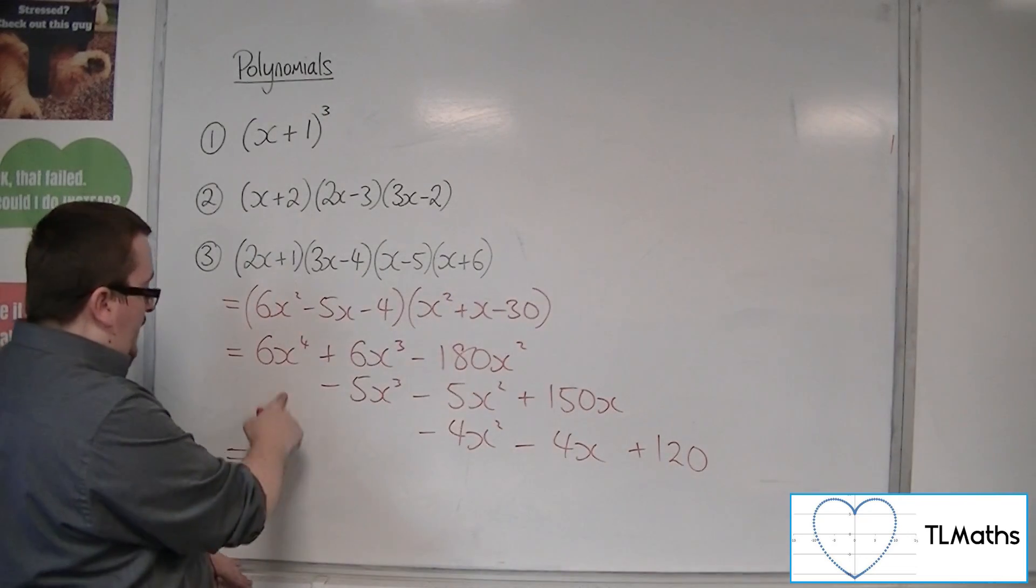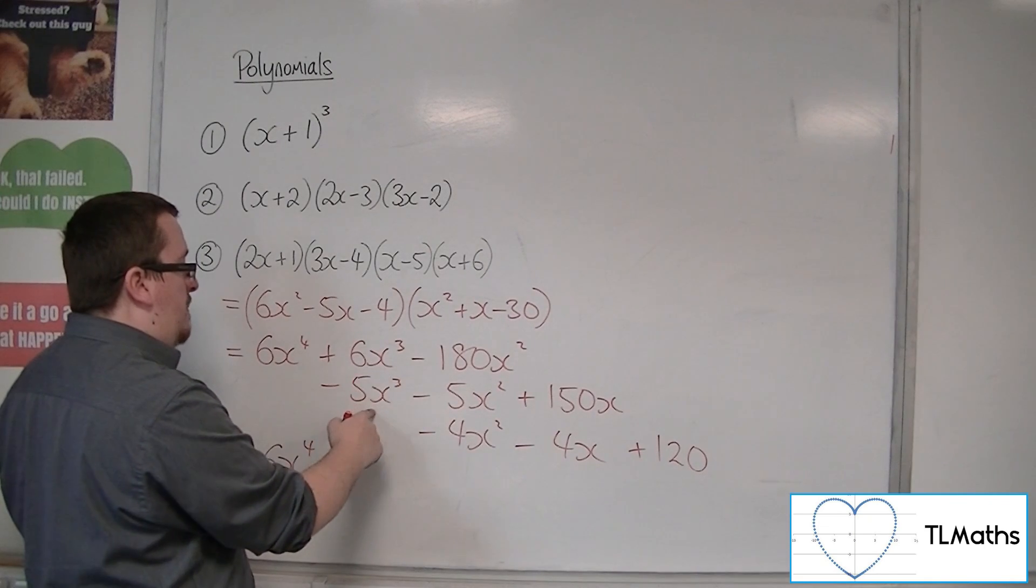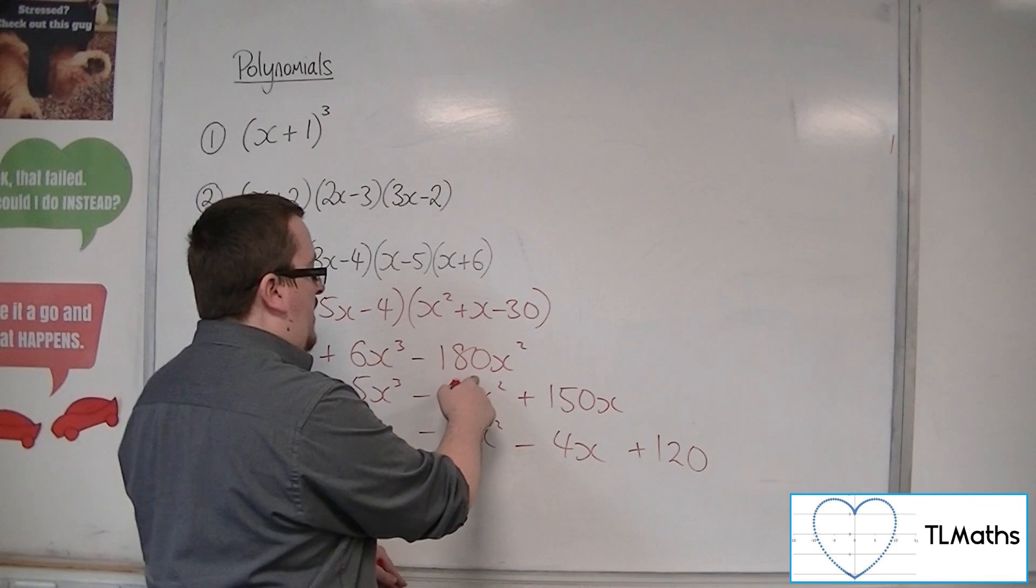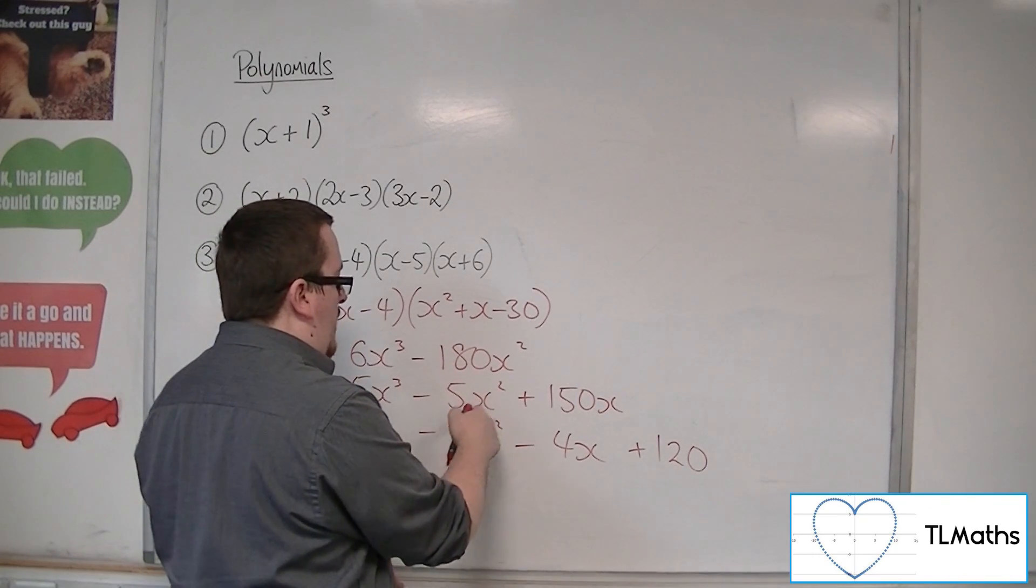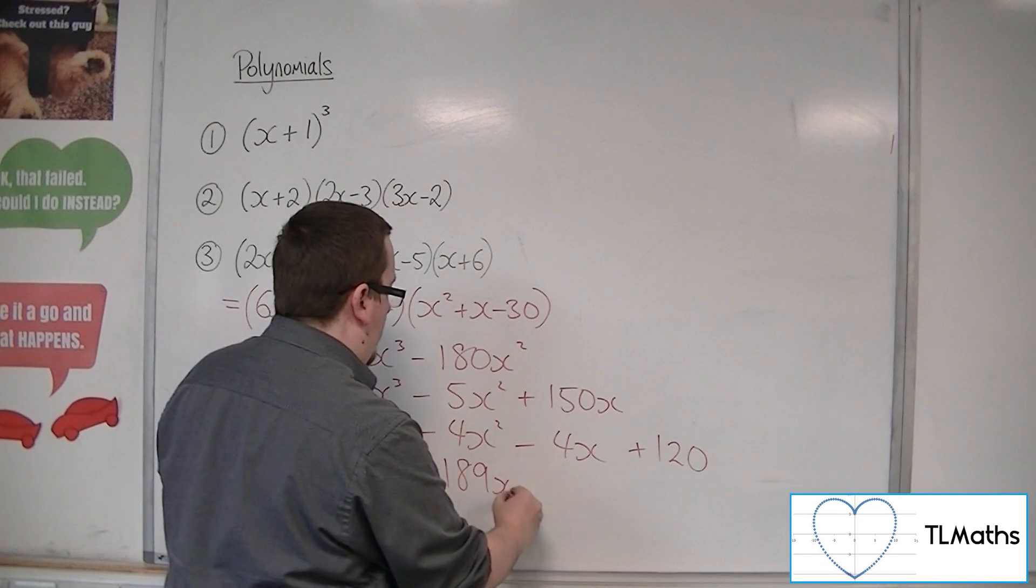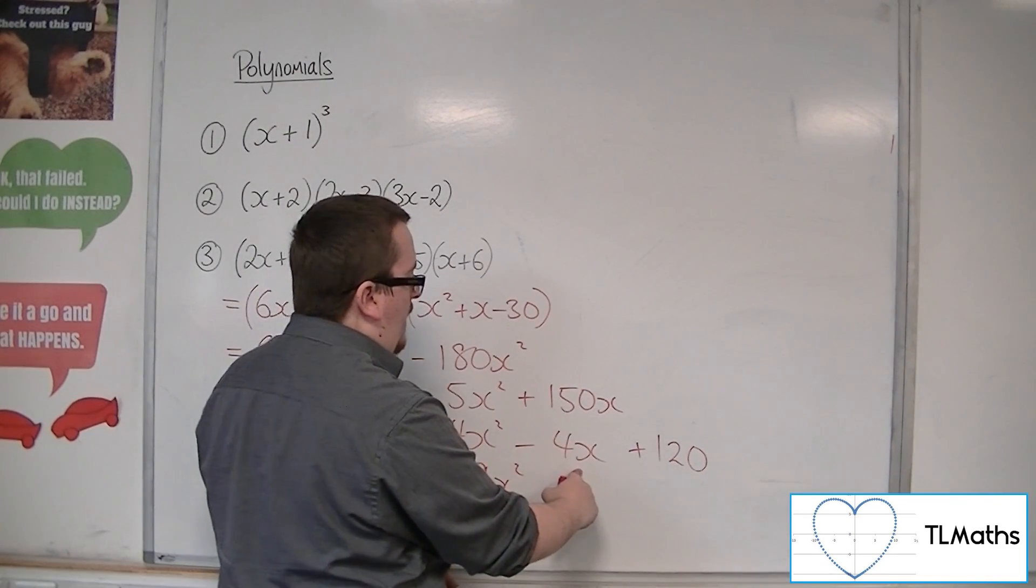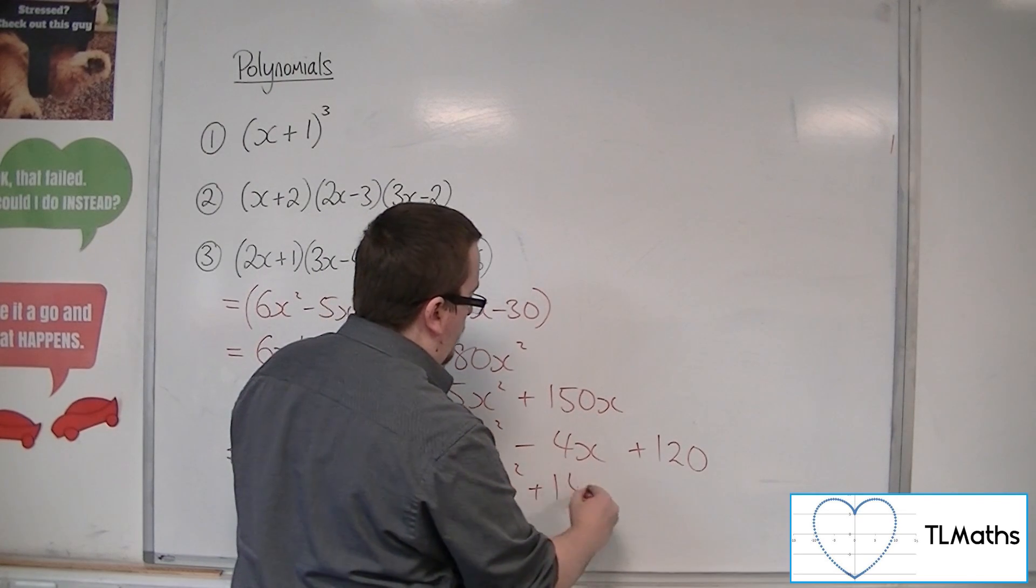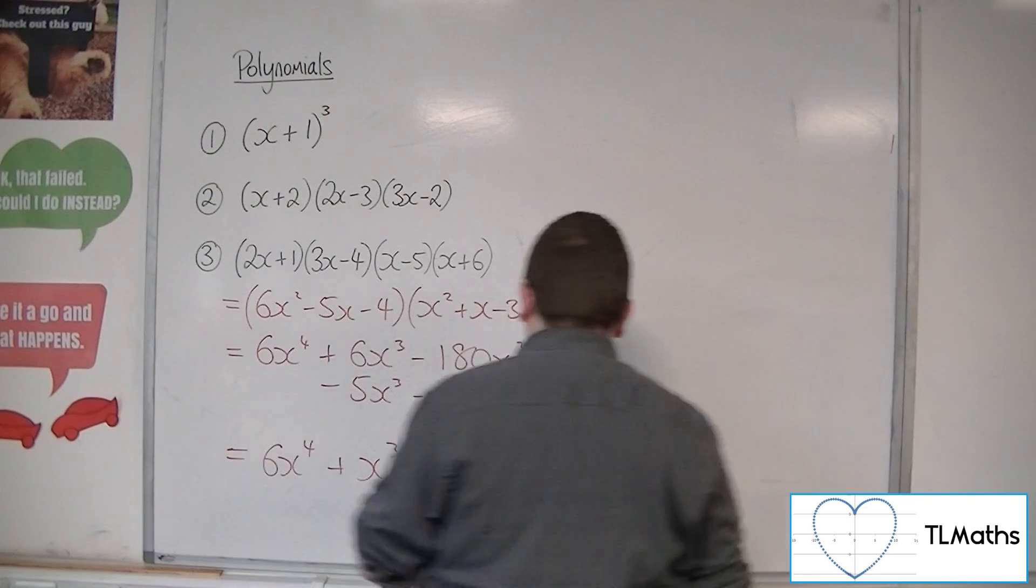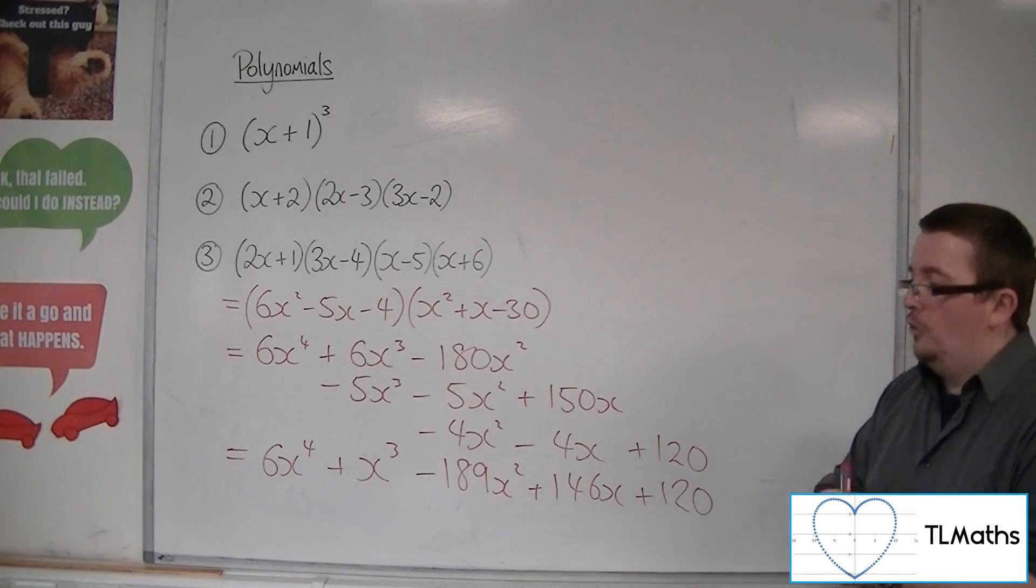So we have 6x⁴. We've got 6x³ minus 5x³, so +x³. -180x² minus 5x² minus 4x² gets to be -189x². And then 150x take away 4x is +146x. And then you've got the 120 on the end. And that is the expansion of those four brackets.